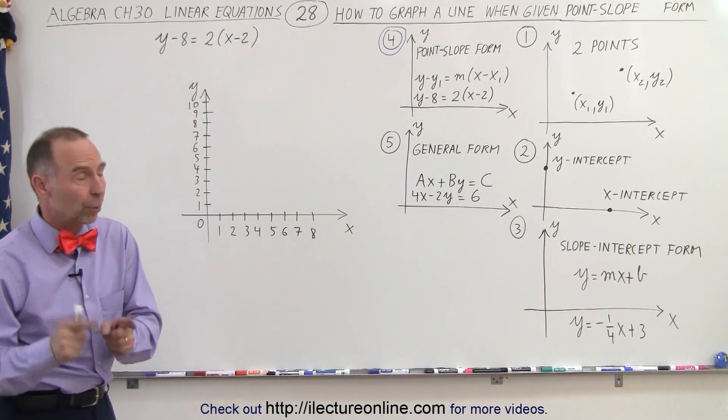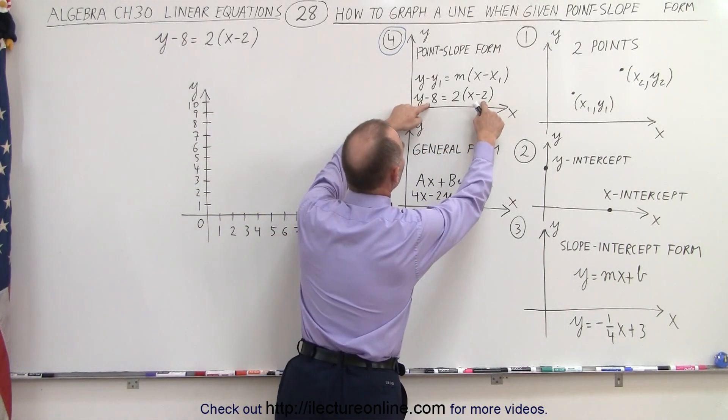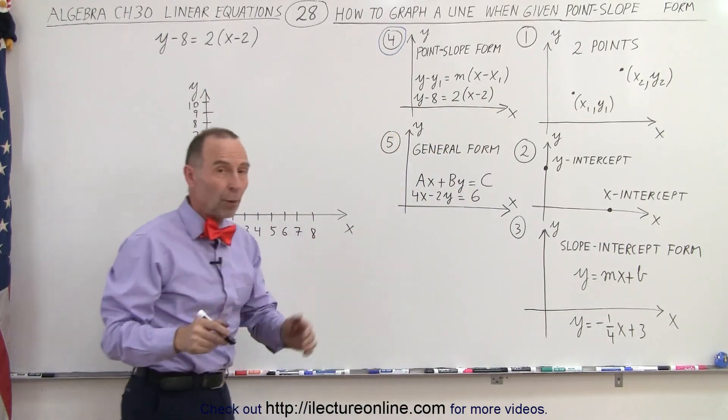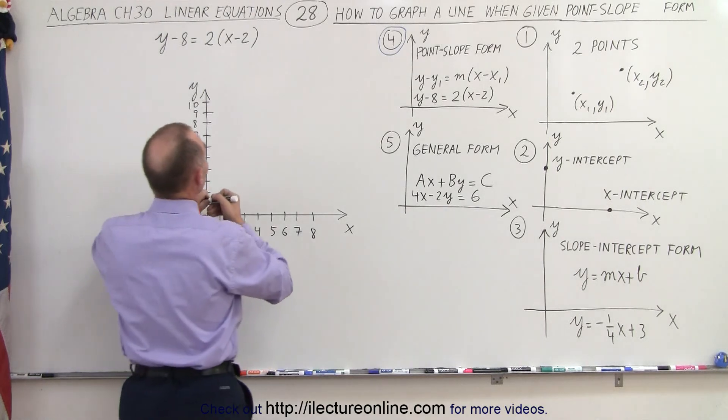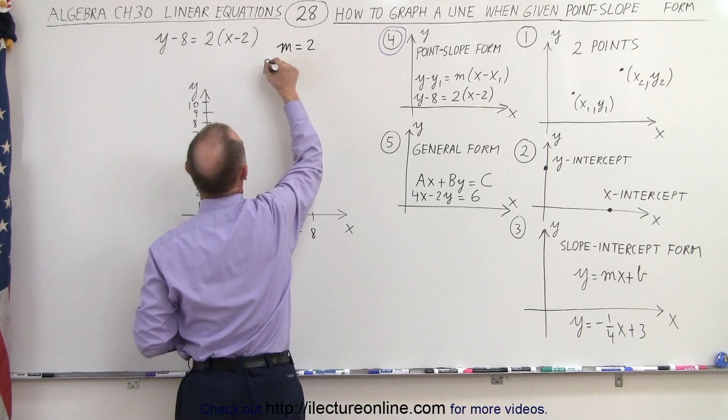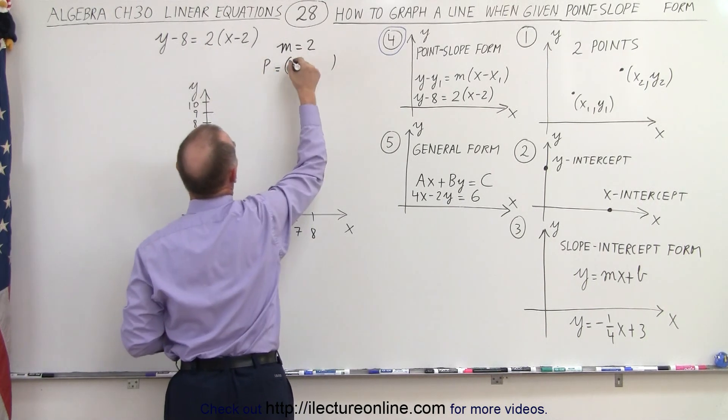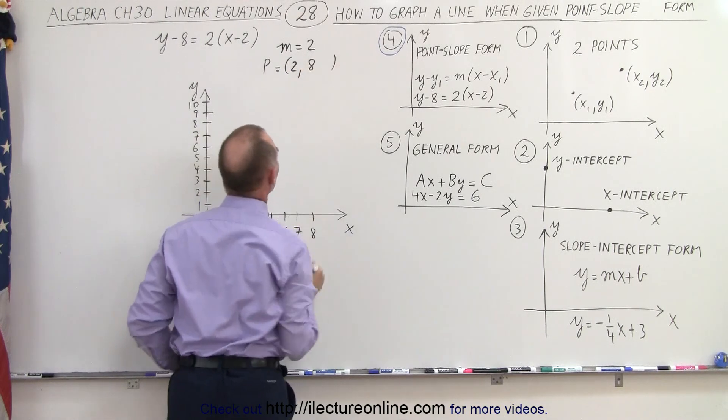Notice that if they give us the equation in the point-slope form, they give us the slope and they give us the coordinates, the x and y coordinates, of a point on the line. So we can say here that the slope m is equal to 2, and that the point is equal to, and the coordinates, it's going to be 2 for x and 8 for y. Like this.